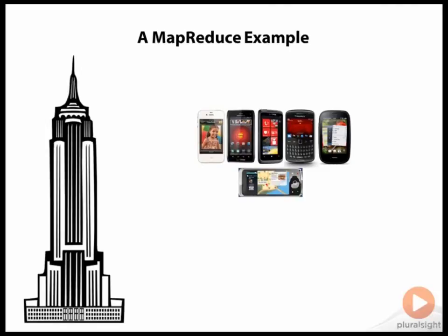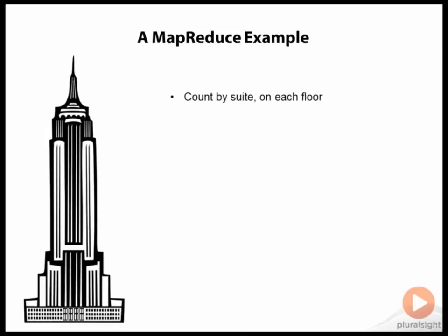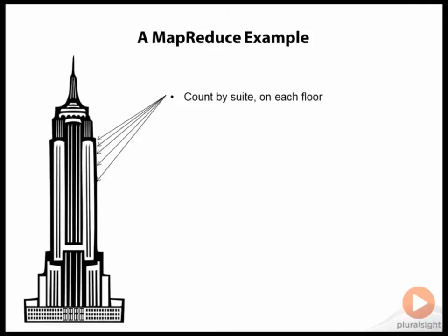By the time we finished, we might be one quarter out of date. Clearly, we don't want to do things that way. But imagine instead if we had a team of people and that team could fan out across all the floors in the building. We could send one person to each floor and tell that person to go into each suite and put on a piece of paper the name of a platform, the total number of handsets, and the suite number — suite number, platform, and number of handsets — for each suite on their assigned floor.